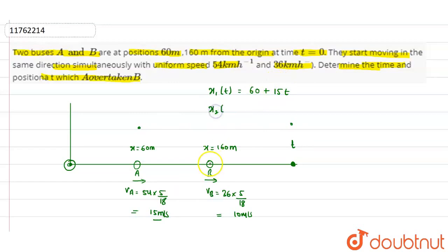Second, if we talk about B, this is 160 plus the distance traveled. The distance is velocity into time, so 10 into T. Now, since the two positions are the same, 60 plus 15T equals 160 plus 10T.